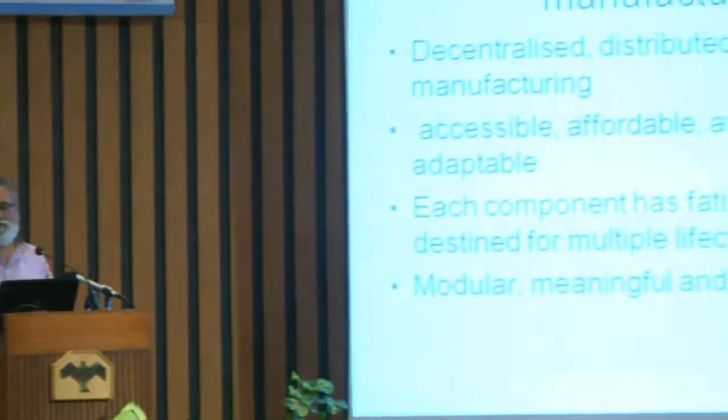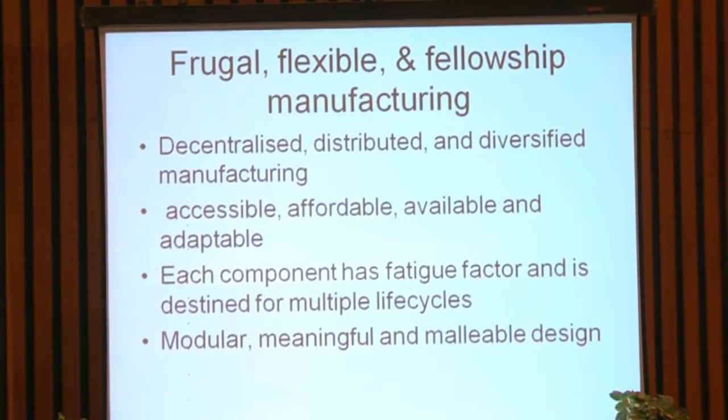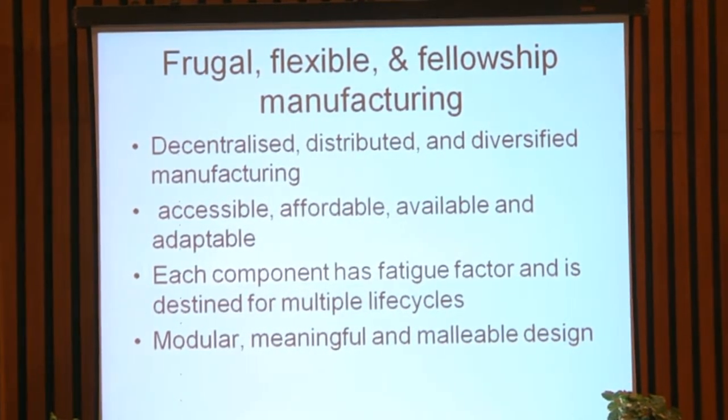As I'm talking to you, many cells in my body are going through mutation. The body manages them by either rejecting, repairing, replacing, or bypassing them. This is the ability that our products will have to develop — modular designs with different possibilities for amending and modifying functionalities, so that depending upon how many features and functional attributes a product needs, they can be modified. This is frugal, flexible, and fellowship manufacturing.